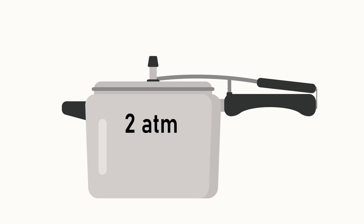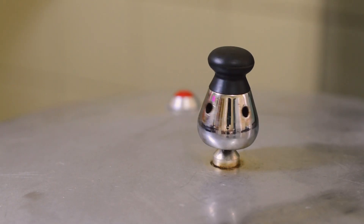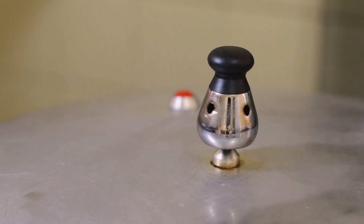If the pressure is doubled to two atmospheres, the boiling point will be 120 degrees Celsius. The pressure increases, and so the boiling temperature rises — the pressure will be wet and lower in this way.